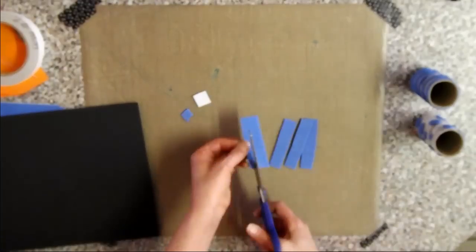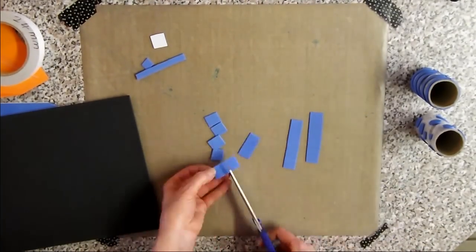Cut some shapes out of peel and stick foam and adhere it to 6mm extra thick foam.